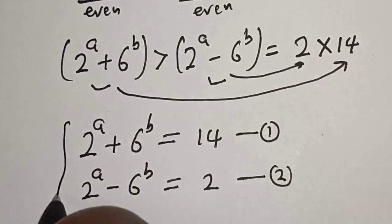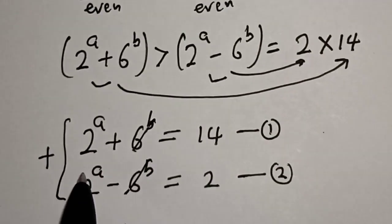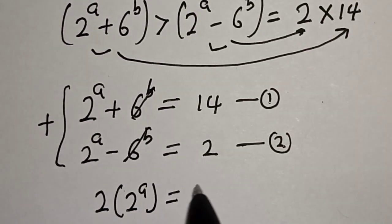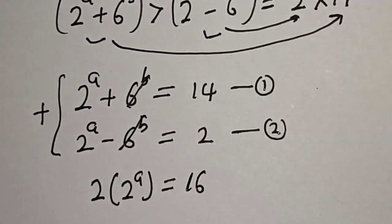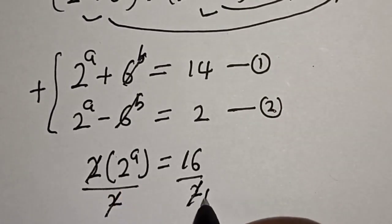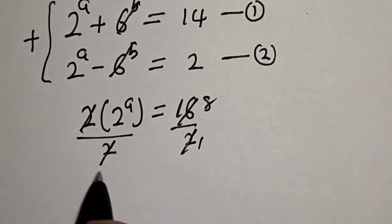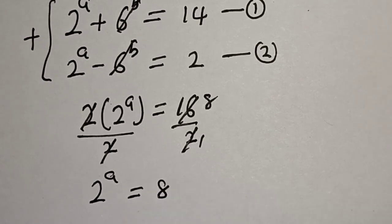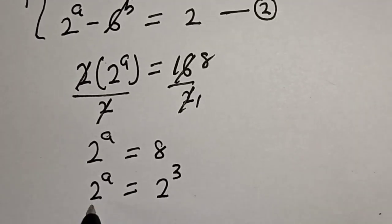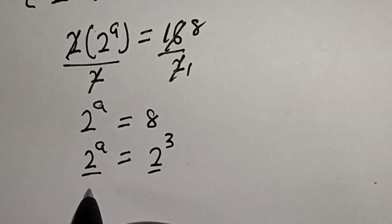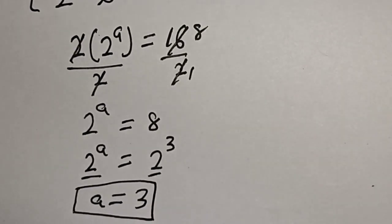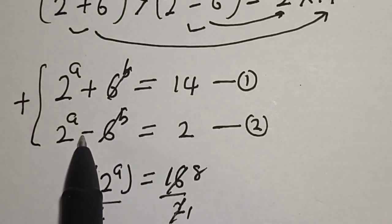Adding equation 1 and equation 2 together, the 6 to the power of b terms cancel. We get 2 times 2 to the power of a equals 14 plus 2, which is 16. Dividing both sides by 2, we get 2 to the power of a equals 8. Since 8 equals 2 to the power of 3, and they have the same base, therefore a equals 3.